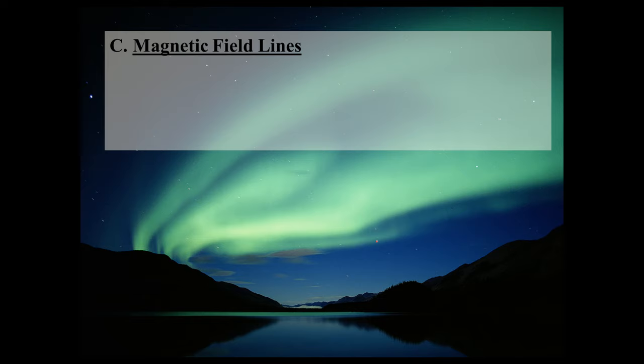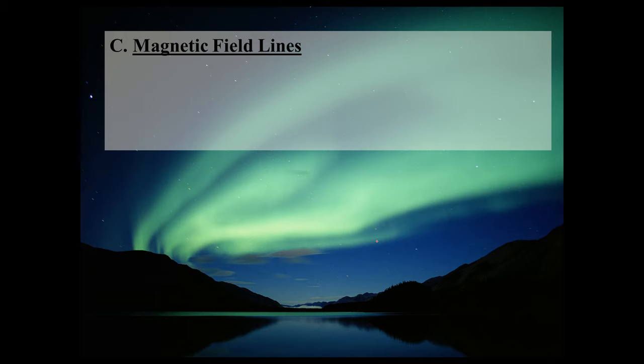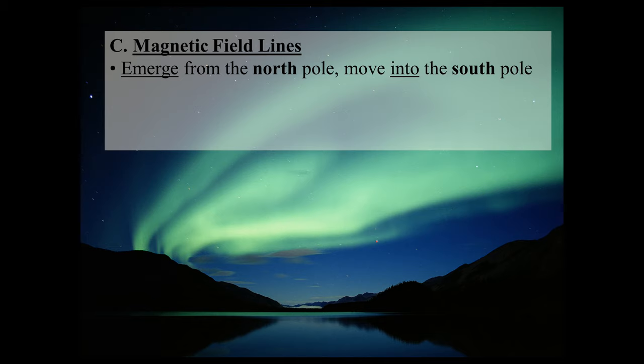Heavy emphasis in this lesson is going to be on constructing magnetic field lines surrounding permanent magnets. Just like with the electric field lines, we're going to look at a few rules. When you draw magnetic field lines, they must emerge from the north pole of a magnet and they have to go back into the south pole. The second rule is that when you draw magnetic field lines, they have to form a closed loop — like a race car track, wherever you start, you have to come back to that starting point. This is quite different from gravitational and electric fields, which do not need to form closed loops.